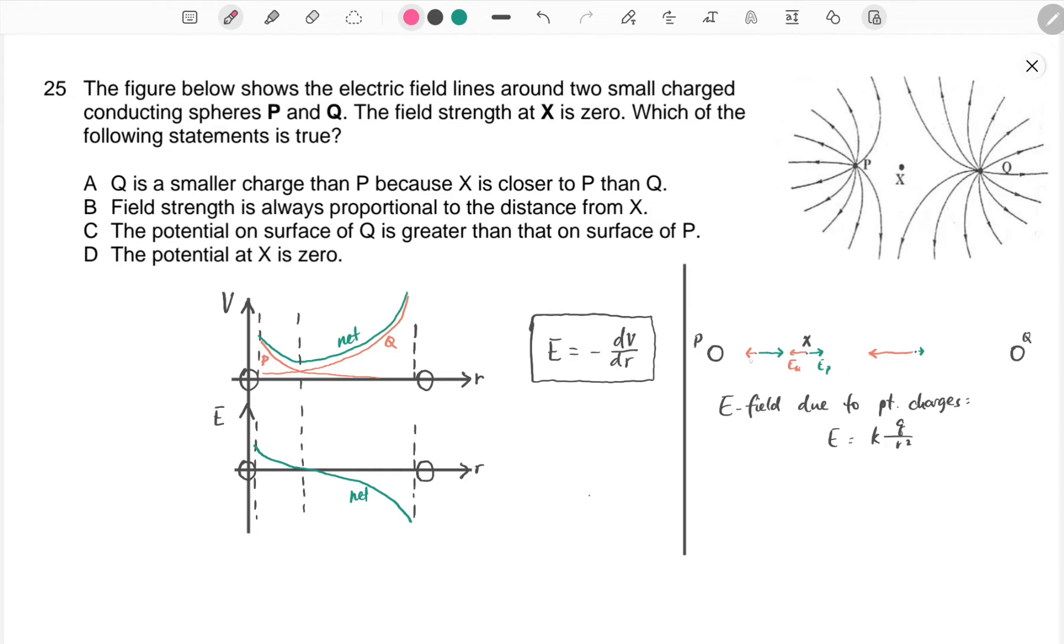And then to the left of point X, the E-field will be to the right. To the right of point X, E-field will be to the left. So just this alone, we know the answer: statement A is wrong. P is supposed to have a smaller charge, not Q.